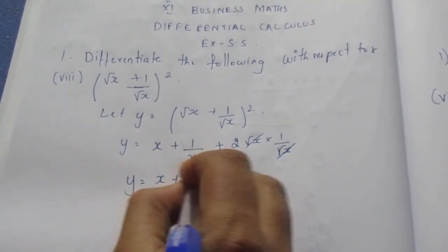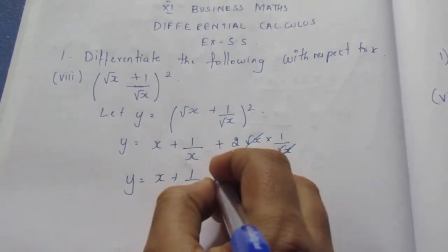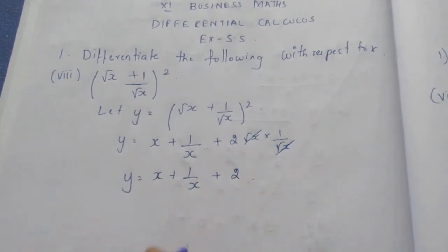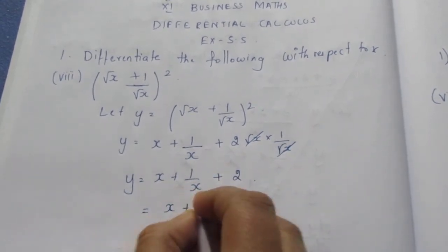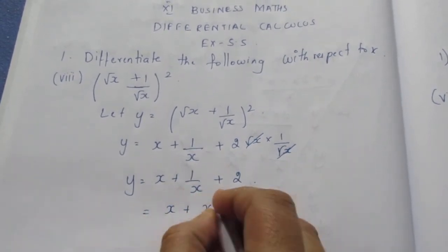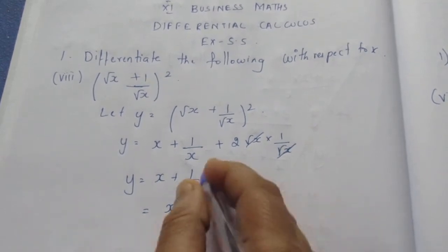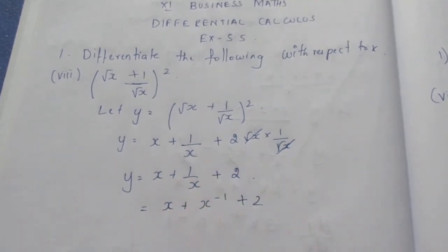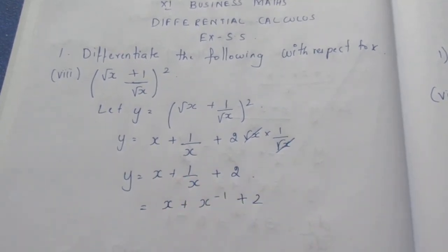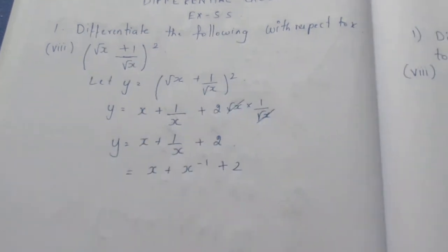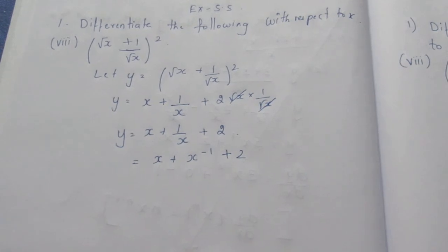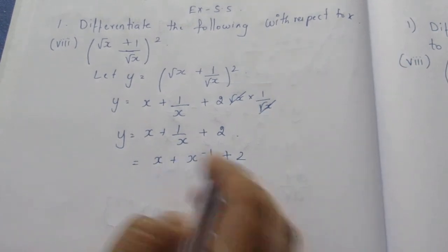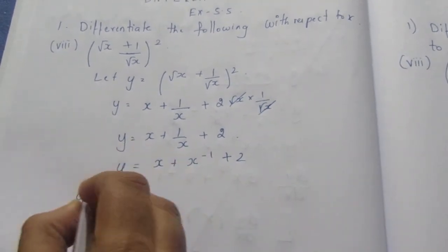After cancelling, y is equal to x plus 1 by x plus 2, which we write as x plus x power minus 1 plus 2. Now we can differentiate this with respect to x.